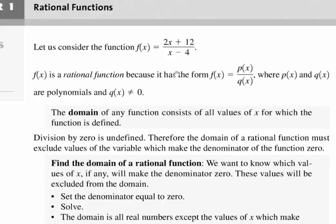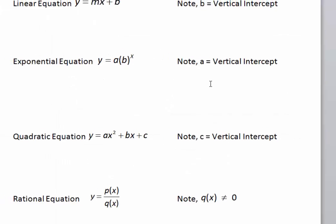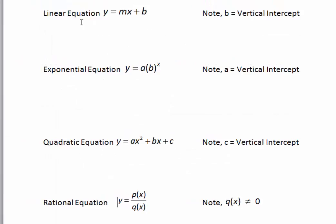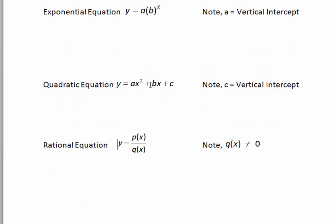To summarize the types of functions we've looked at: we had linear equations in the form y = mx + b, the exponential equation y = a · bˣ, our quadratic, and now here's our rational function, which would be p of x over q of x.